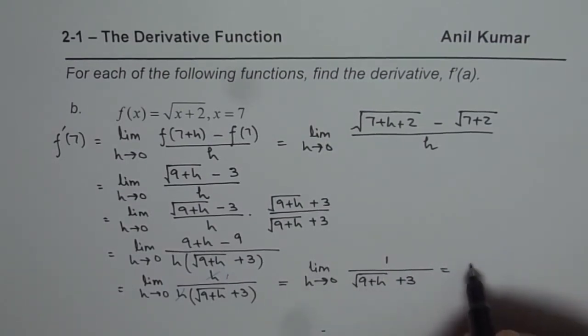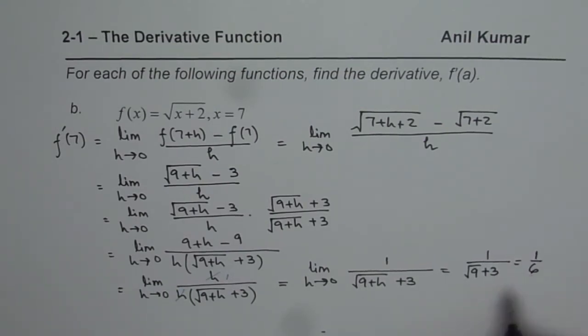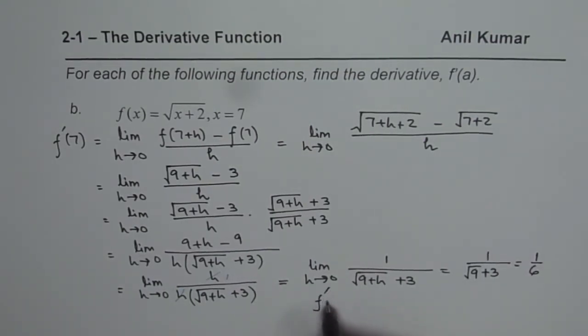Now substituting h equals 0, I get this as equals to 1 over square root of 9 plus 3. And that is 3 plus 3 which is 6, so 1 over 6. And therefore I can write f dash at 7 for the given function is 1 over 6.